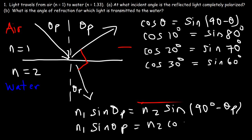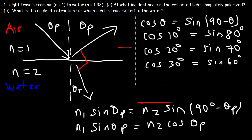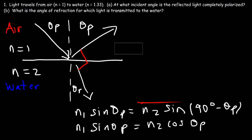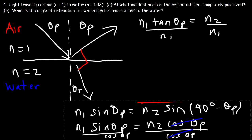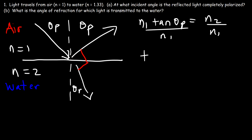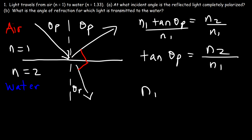So now we have n1 sine theta_p equals n2 cosine theta_p. Dividing both sides by cosine theta_p, sine divided by cosine gives tangent. Then dividing both sides by n1, we get: tangent theta_p equals n2 over n1. You need to know the direction in which light travels — light goes from the material with index n1 to the material with index n2.